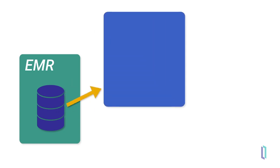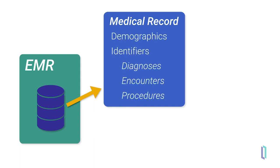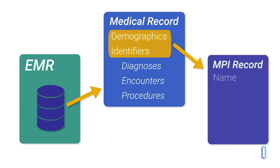The information in these systems are called medical records, or clinical data records. These medical records contain demographics, identifiers, and clinical data, and are the source of demographic and identifier data for the MPI records.